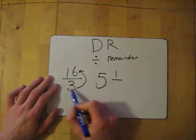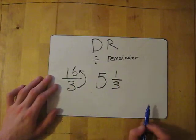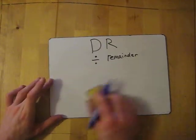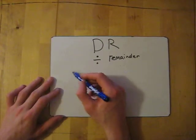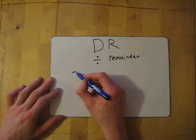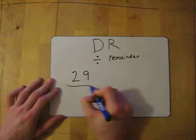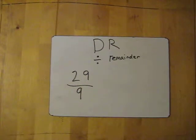Now one for you to try: 29 over 9. If you want to pause and have a go, go through it. Ready? 3, 2, 1.